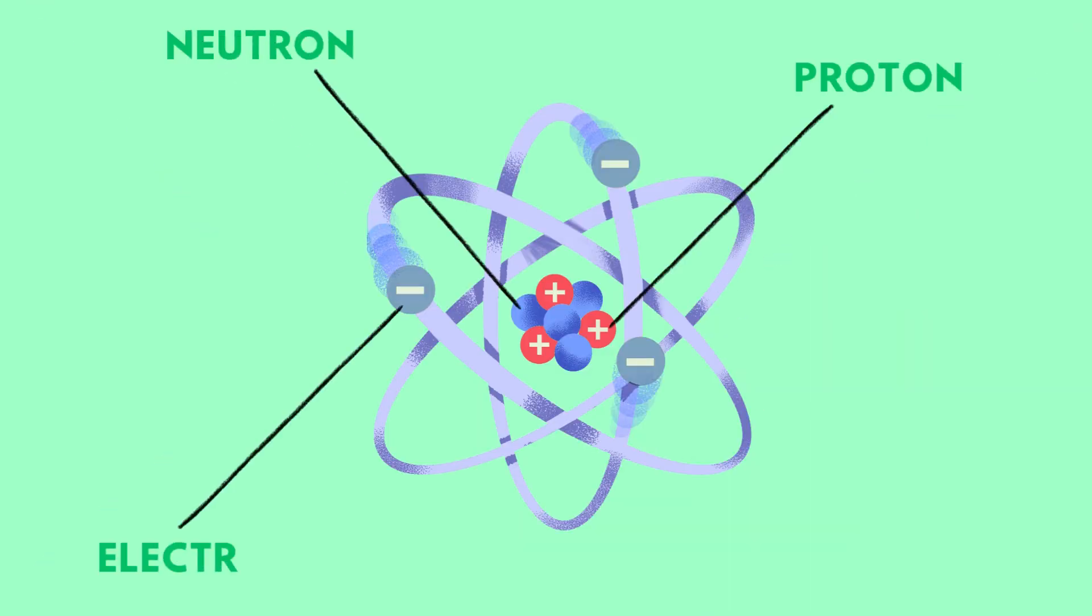An atom consists of two regions as shown in the diagram. The center of an atom is called the nucleus. The nucleus contains protons and neutrons. Protons have a positive charge while neutrons have no charge, meaning that they are neutral.